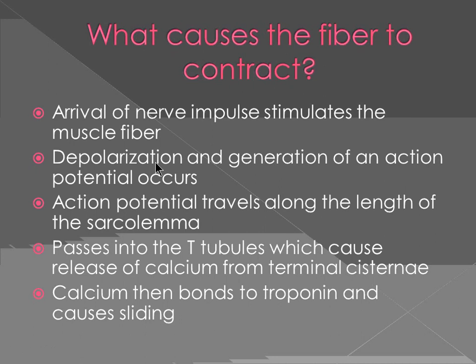When calcium is released it binds to troponin, and the sliding occurs. This is the part we have seen so far: calcium being released, binding to troponin, changing the actin filament structure so that the binding sites become open, and myosin can attach. Now we are going to look at the T-tubule's role. In this slide you can see the T-tubule with terminal cisternae on either side — that's why we called it a triad.